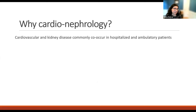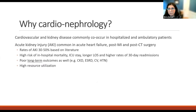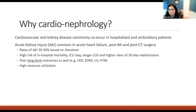We know that cardiovascular disease and kidney disease commonly co-occur in hospitalized and ambulatory patients. In particular, if you think about hospitalized patients, acute kidney injury is incredibly common in patients with acute heart failure, post-myocardial infarction, or undergoing cardiothoracic surgery. Based on the literature, rates of AKI range from 30 to 50 percent in these patients. AKI is associated with poor short-term outcomes, including higher risk of in-hospital mortality, more likely to be associated with an ICU stay, longer length of stay, and more likely to be associated with 30-day readmissions.